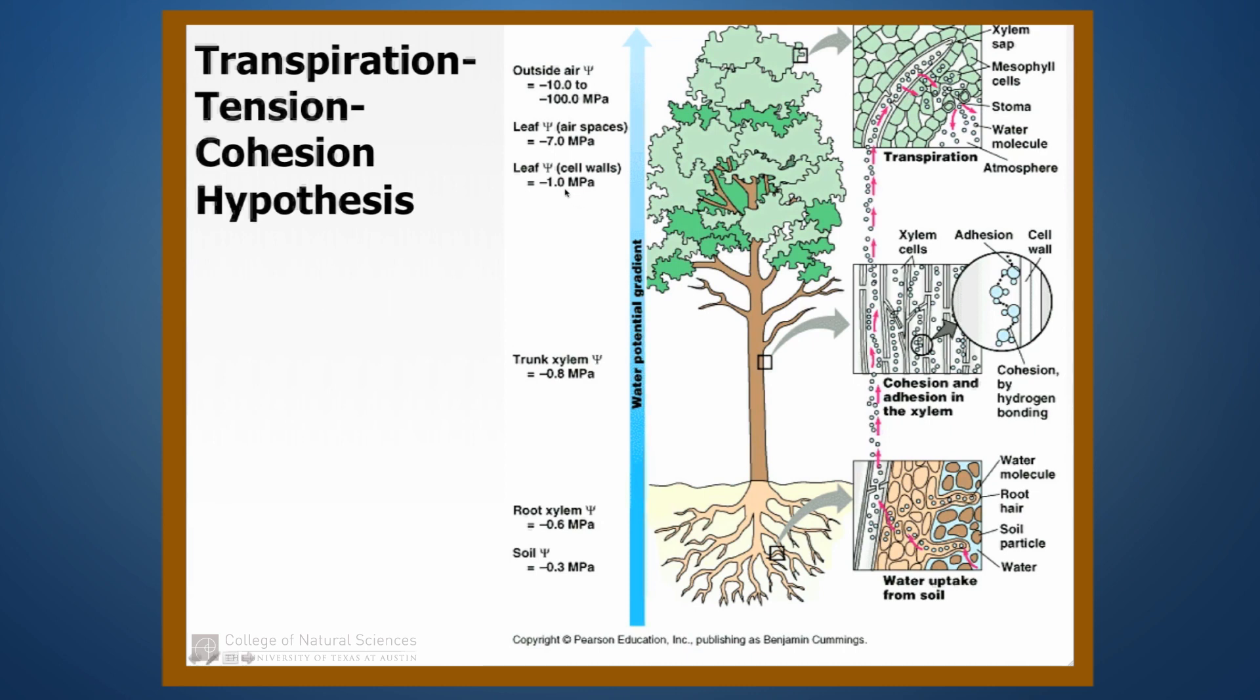And at the cell wall, usually leaves have about a negative 1 MPa pressure potential.